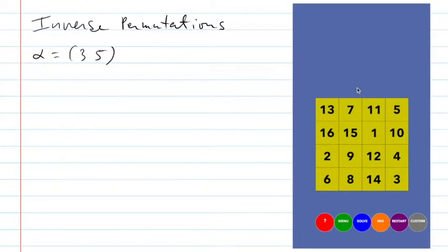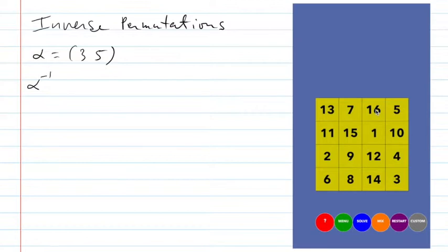In a lot of puzzles like this, you actually do have that ability, so I can swap them back, like that. When we do that, we call that an inverse permutation. I did three, five, and then I undid it — and that's the way we express the inverse of permutation alpha. I undid it by going five, three.